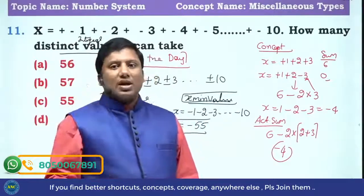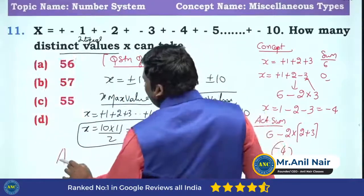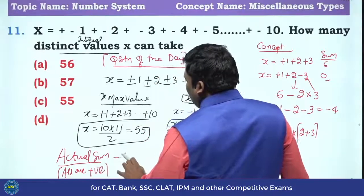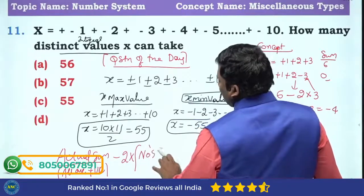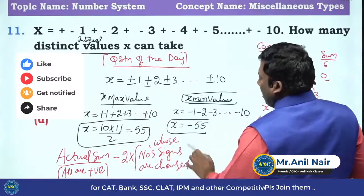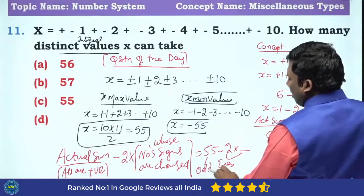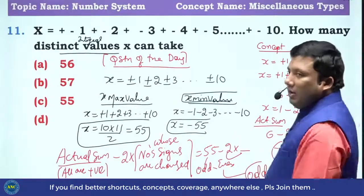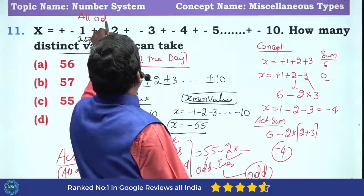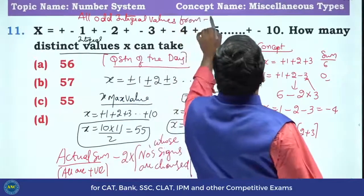So if you are adding numbers and plus A becomes minus A, the net drop is 2 times that number. The formula is: actual sum (when all positive) minus 2 times the numbers whose signs are changed. The actual sum here is 55, which is odd. And 2 times any number is always even. Odd minus even is always odd. So even though the range is minus 55 to plus 55, the answer is all odd integral values.